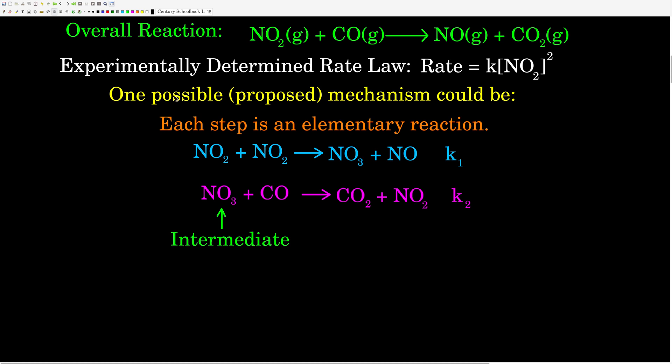A possible proposed mechanism could be what we have down here. When we're writing a mechanism, we write out what are called elementary reactions — each step is an elementary reaction. There are a few things special about them. Because they are exactly what we're saying is happening, the rate law for an elementary reaction — not an overall reaction — we can write just by looking at the equation. It's going to be rate equals K times the concentration of each reactant raised to the power of their coefficients.